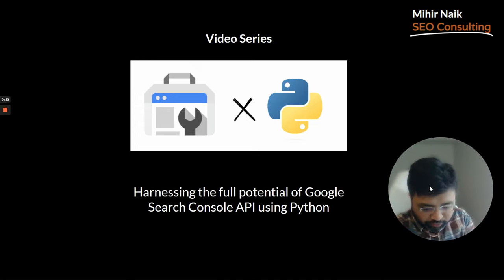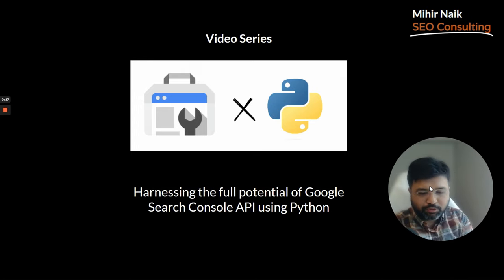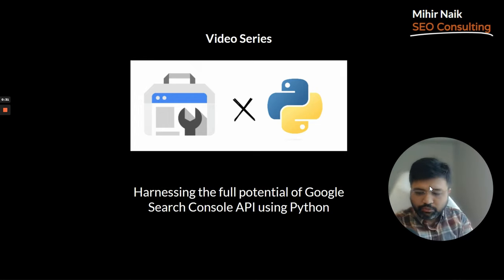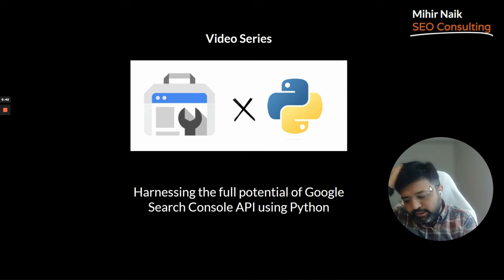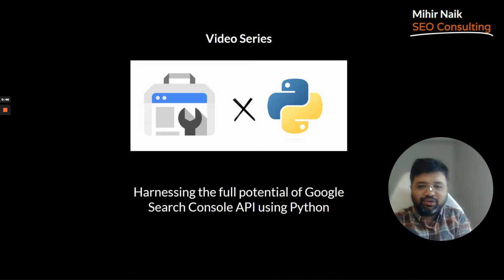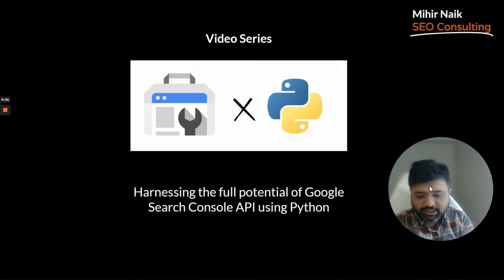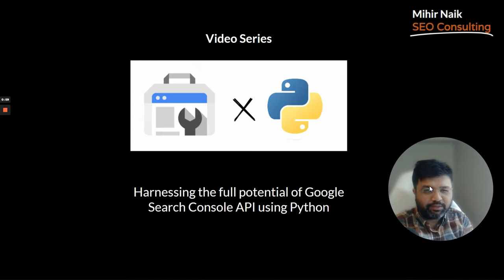This video and the following videos make up a whole series about Google Search Console data. We are trying to learn how to use Google Search Console data using the Google Search Console API with the help of Python. I spent a few months figuring out how to get this data — I started with a Google Sheets extension, Search Analytics for Sheets, then started connecting Google Search Console with Data Studio.